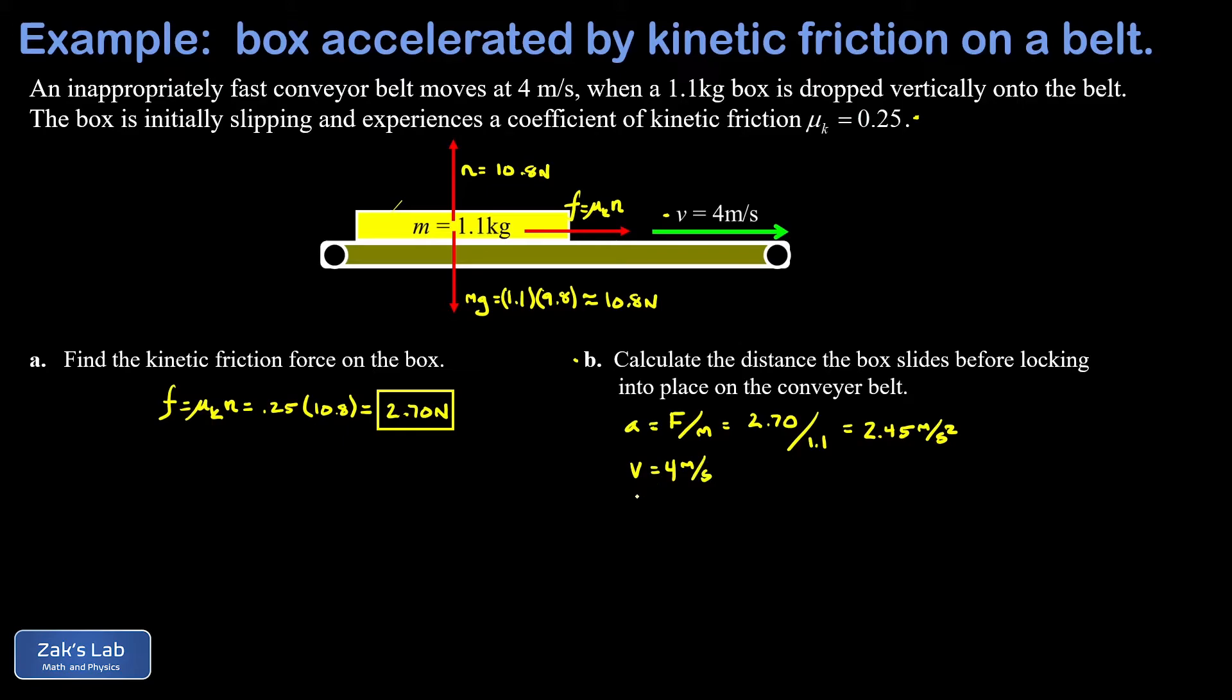We know the final velocity v = 4 meters per second, initial velocity = 0, and the acceleration. We're interested in the sliding distance to achieve that final velocity. These kinematic variables are related by the time-independent equation: v² = v₀² + 2a(x - x₀).